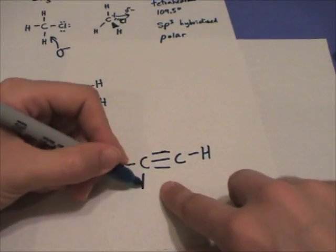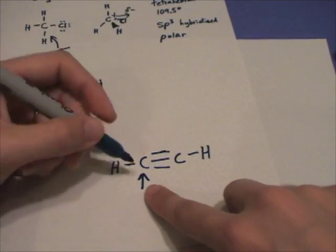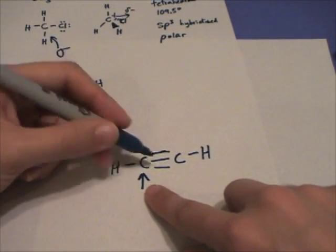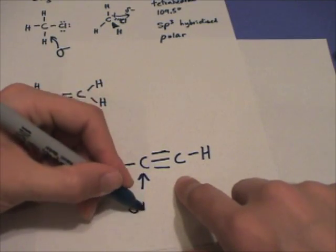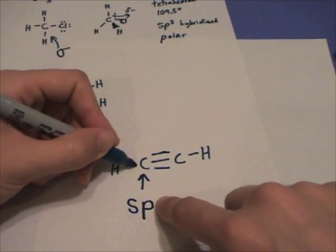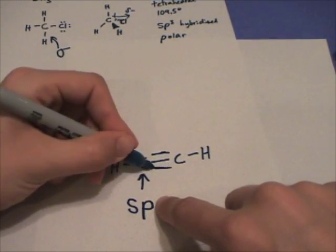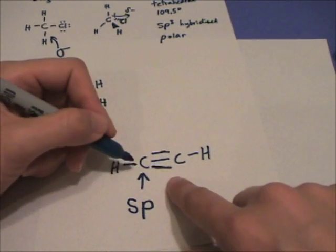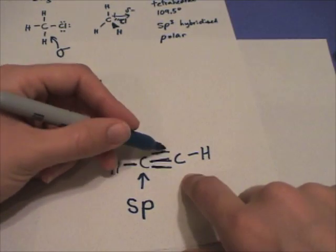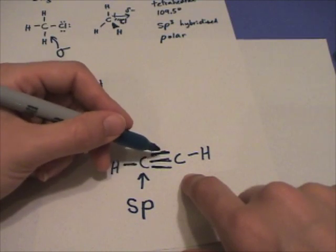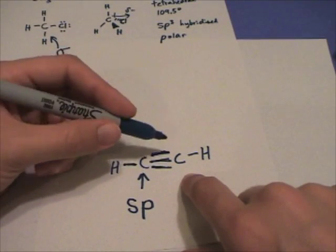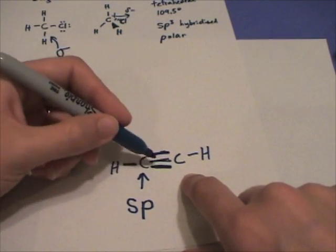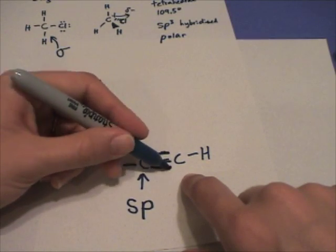C2H2. Alright, this carbon has two regions getting as far away as possible. So it's linear and it's sp hybridized. There's a sigma bond here and a sigma bond here. So there's two sigma bonds getting as far away as possible. These are two separate pi bonds. So you have a sigma and two pi bonds that make up a triple bond.